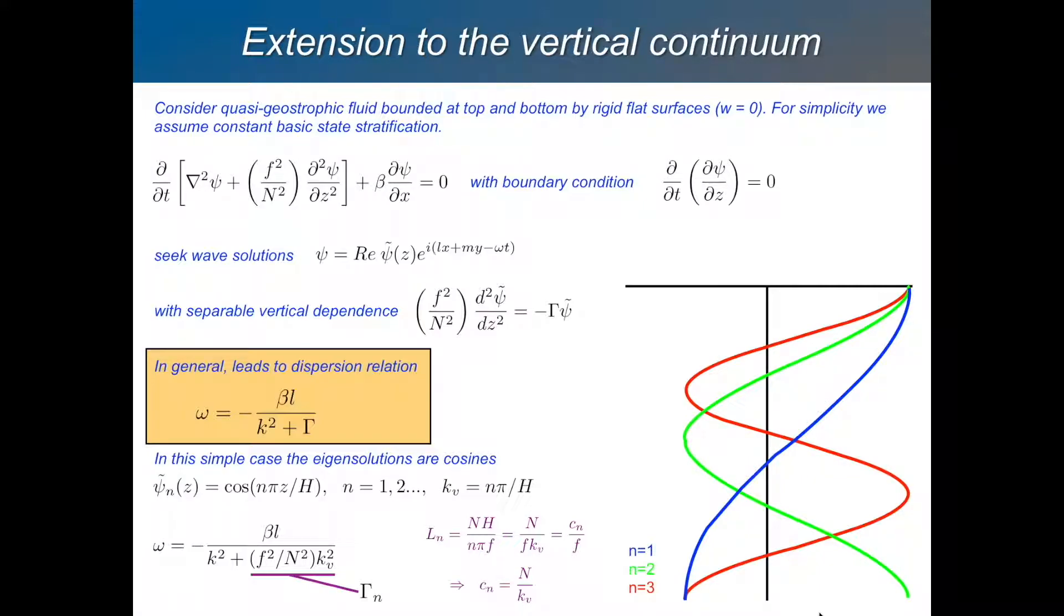And the phase speed of the Rossby waves is given by omega over L. You can also express this vertical wave number in terms of C N, which is not the Rossby wave speed. It's the gravity wave speed. N over K. So we're going to use that in a minute.